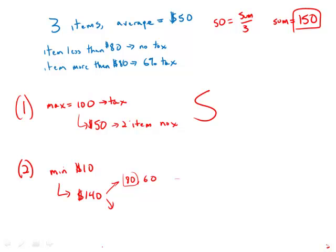It could be $110 and $30, in which case there'd be tax on that one and not on the other. Or it could be $70 and $70, in which case there would be no tax on either item and no tax at all on the entire purchase.